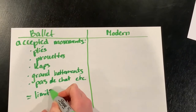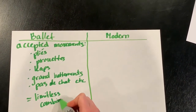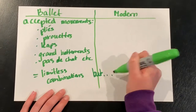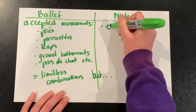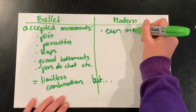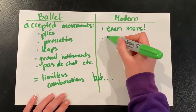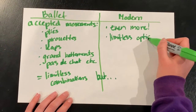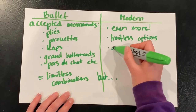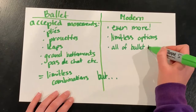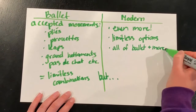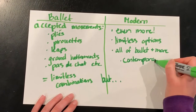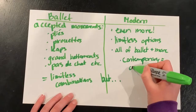In ballet, a dancer or choreographer could not include any steps that aren't an accepted part of the art form. However, modern opened countless doors and possibilities. It led the way to a more contemporary form of dance which allowed for more creativity and body movement that had not been seen before.